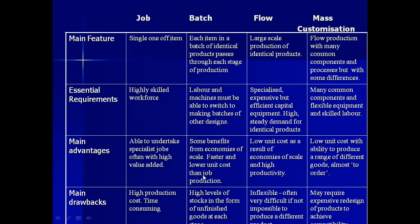A main drawback of batch production is high levels of stocks in the form of unfinished goods at each stage. Because you produce in greater quantities than job production, you produce and then wait for customers to come and buy. You have to store goods somewhere, possibly hiring a warehouse and paying rent. In job production this is not the case — you produce according to customer requirement, give them a deadline, and deliver when they arrive, so there is no extra stock to store.